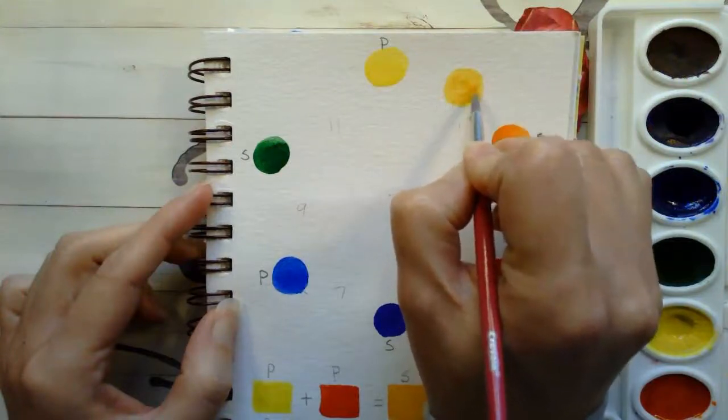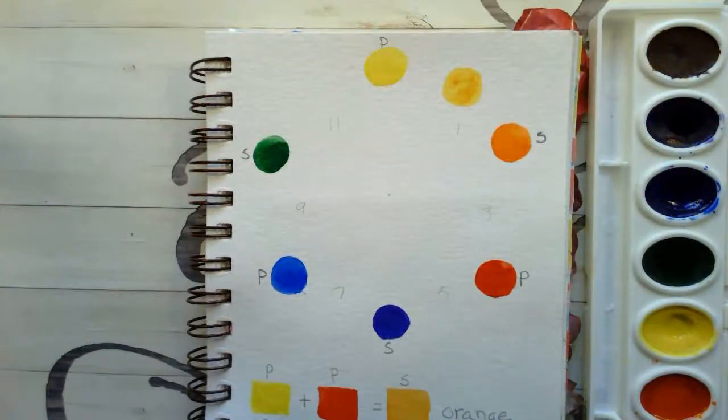We've already talked about how to adjust that so that if it looks too yellow, you're going to add a little bit more orange. And if it looks too orange, you're going to add a little bit more of the yellow.